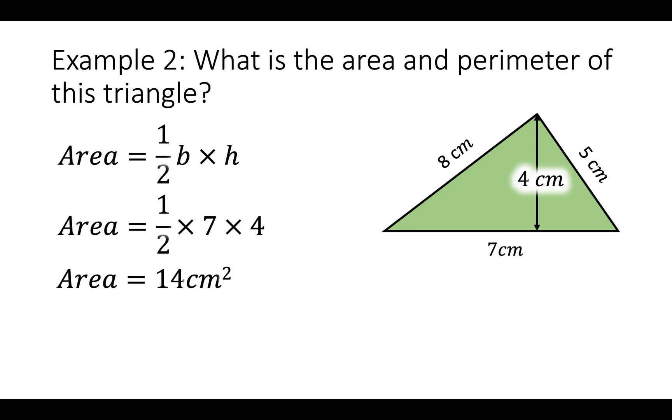The perimeter is 5 plus 7 plus 8. We add up all sides. And when we add them up we get 20cm. Notice the area is in 14cm squared. Because we always measure the area in centimeters squared. Or meters squared. And the perimeter is just in centimeters because it's a distance.